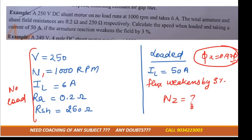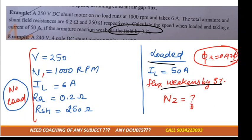This is the same question we had done earlier. All the things are the same - this is the condition for no load and this is the condition for load. But in the previous question, flux is constant, and in this question they said flux weakens by three percent. So that means phi 2 is equal to 0.97 phi 1.